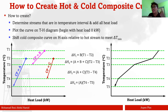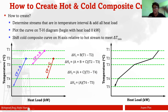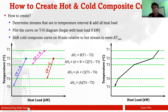So, how can we represent all three streams into one composite curve? First, identify your streams — that's step one. The next step is to create an initial plot where on the y-axis you have temperature. Just plot all the temperature values of your streams — both initial and final — and remember their CP values. The slope of each line doesn't really matter at this point.